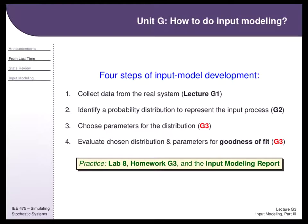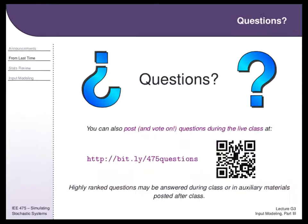We've covered the data collection step, which you'll become more familiar with as you move into your input modeling report. Last time we covered how to coarsely pick a distribution family. Now we want to say: given a family, how do we choose parameters, and then how do we evaluate our choices in terms of goodness of fit? You'll have practice at this in Lab 8, in Homework G3, and in your input modeling report.